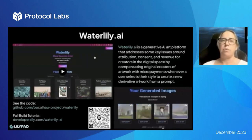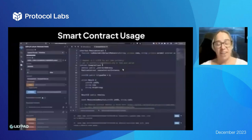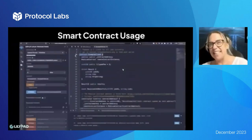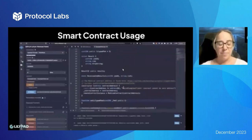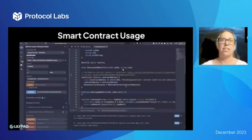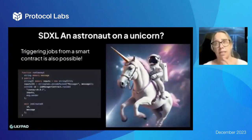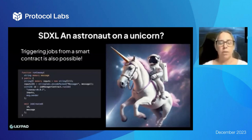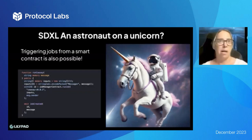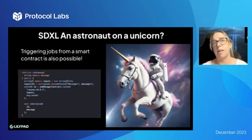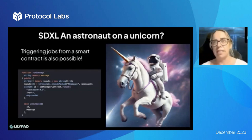You can also use Lilypad from a smart contract — you could trigger jobs directly from a smart contract or from a front-end dApp using our smart contract interface. Go check our docs on how to do this — we're going to put more information in there and I'll put a video up soon.